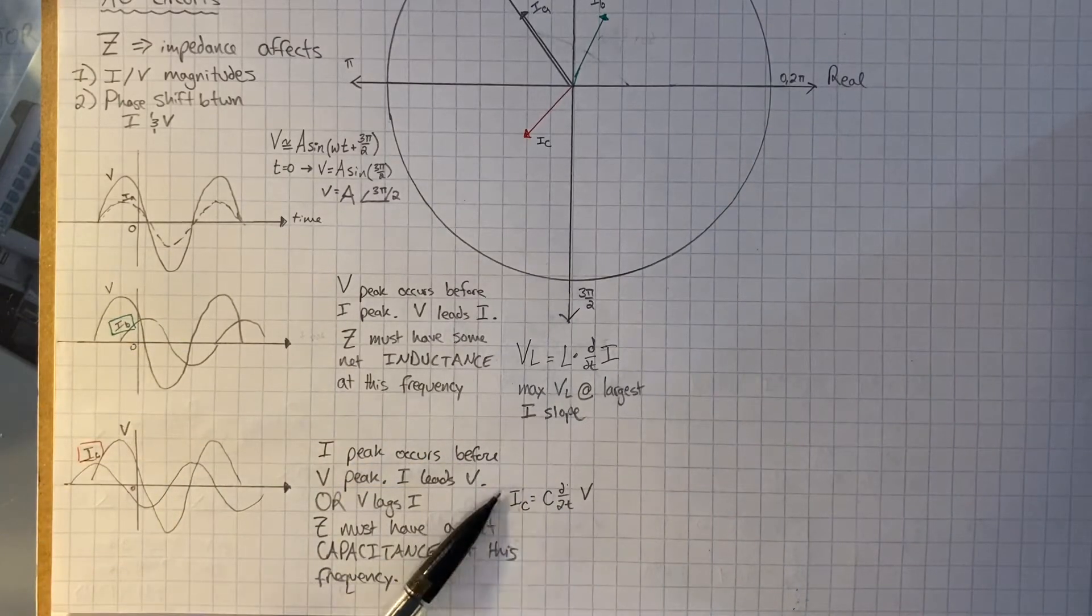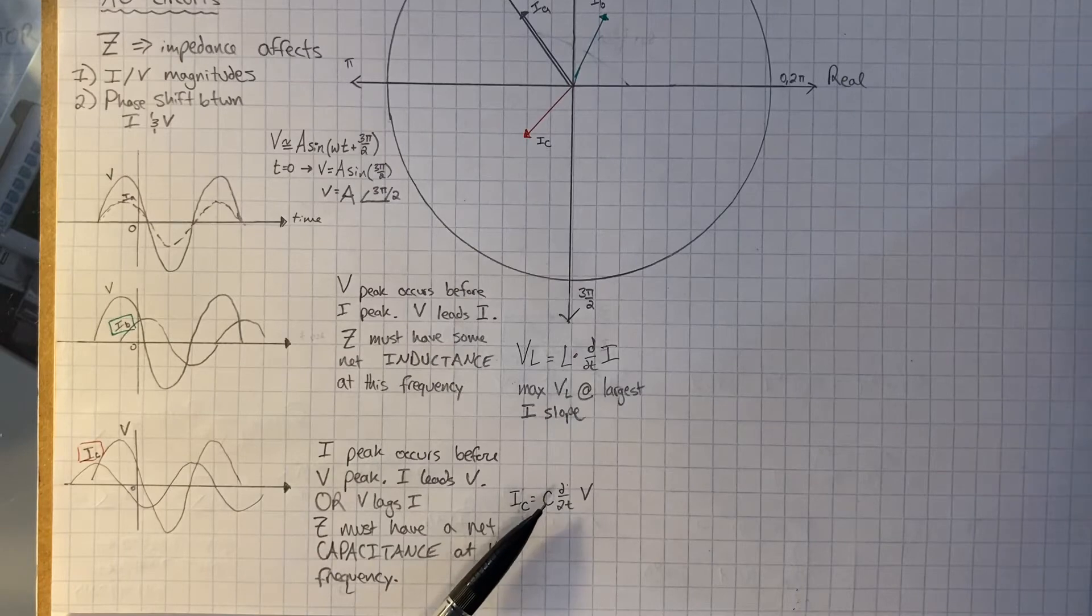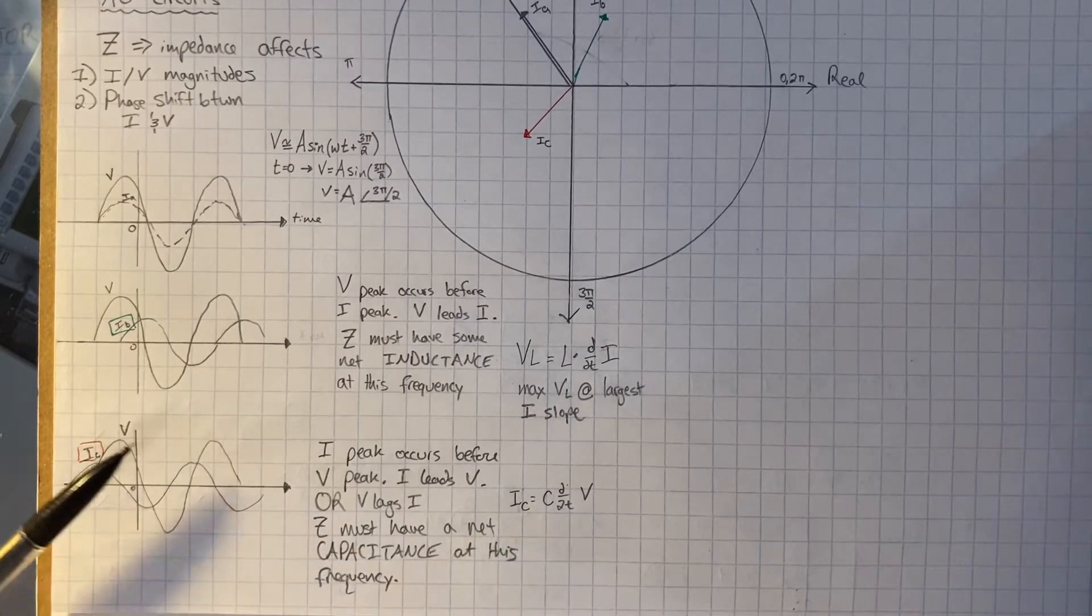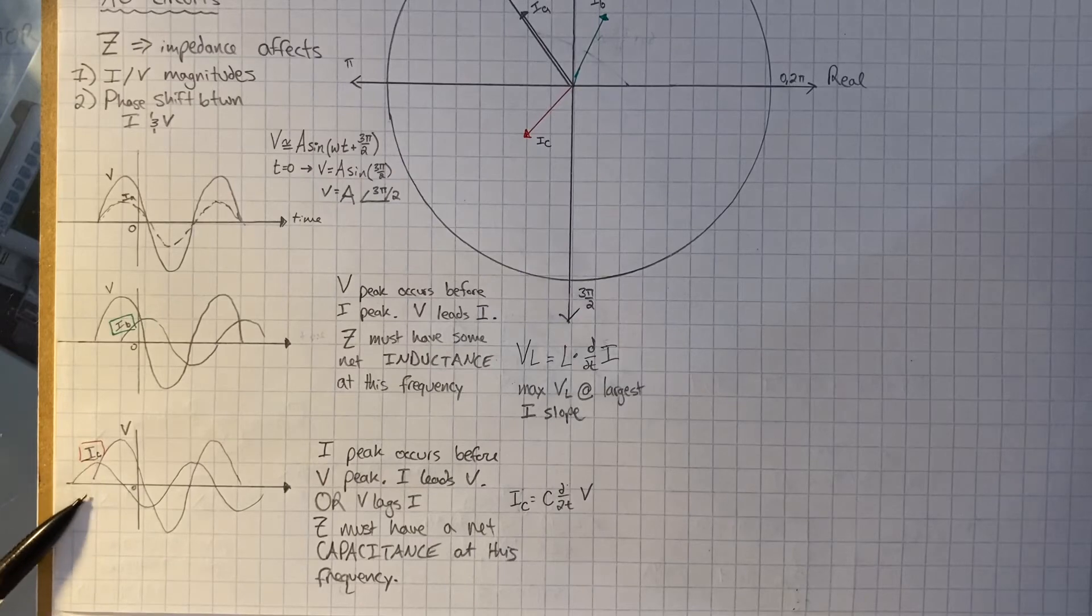Here, another giveaway equation for a capacitor is that the current through a capacitor is the capacitance times the derivative of the voltage. So we see here the maximum current is at the maximum slope of the voltage.